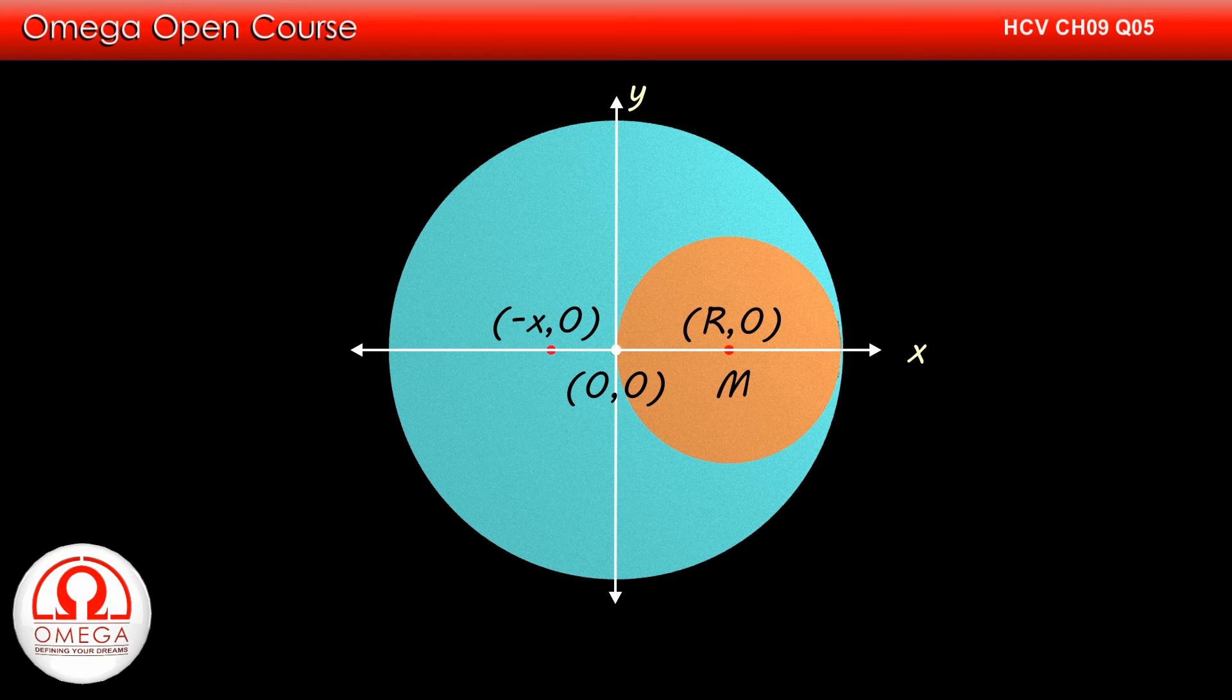Thus, mass of the larger disk is 4 times the mass of the smaller disk. Hence, mass of the larger disk is 4m. Now, the mass of the remaining portion of the disk must be 4m minus m or 3m.